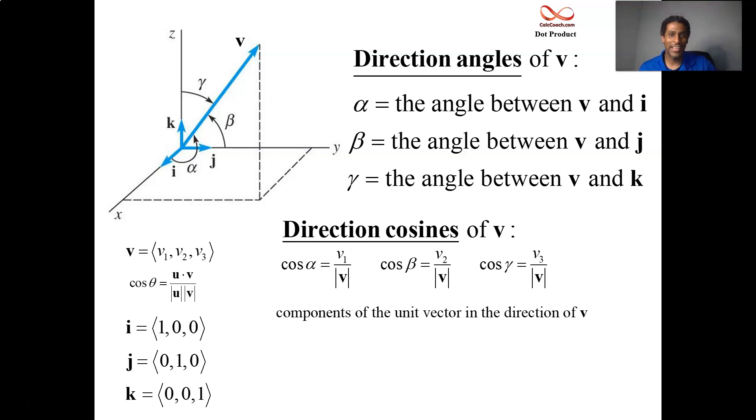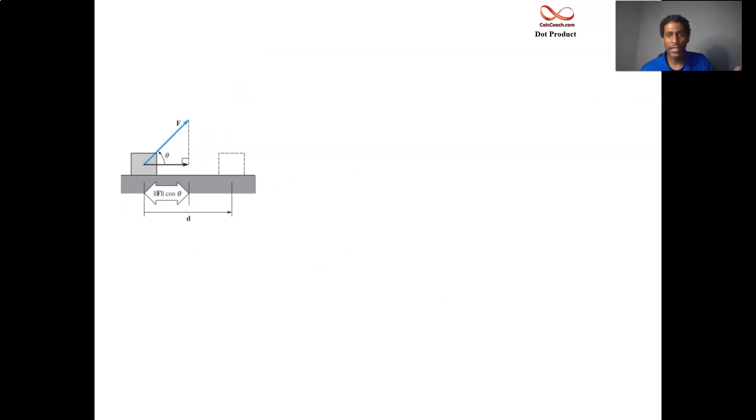A physics application is going to be work. The work done by a force can be calculated using the dot product. When a constant force moves an object a distance d units in the same direction as the object, then to find that work done, you just take the magnitude of the force and you multiply by the distance that you moved it. Displacement, officially, should be the right word for that.